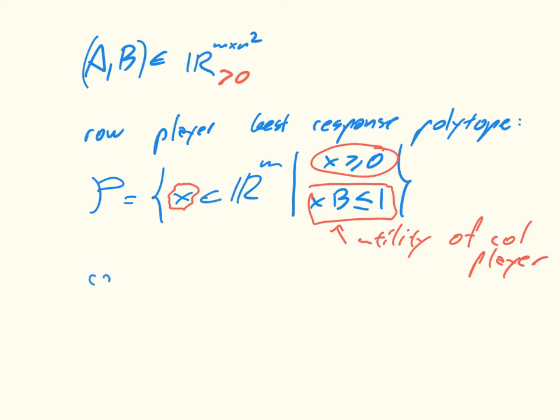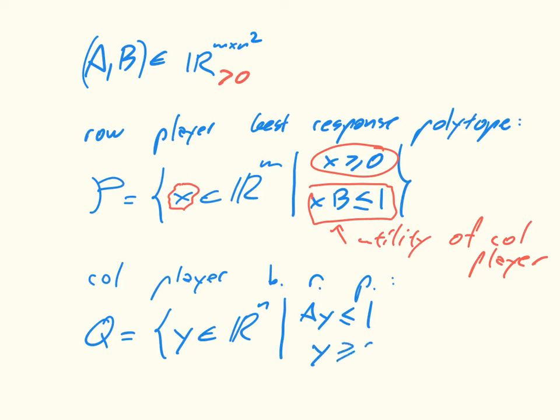The column player best response polytope is defined very similarly. So we have Q, and now I'm going to use Y, and this is a vector of size N. And we have more or less equivalent inequalities, but I'm going to order them differently, and that ordering is important. So I'm first going to say, give some upper bound to the utility of the row player. And Y is greater or equal to zero.